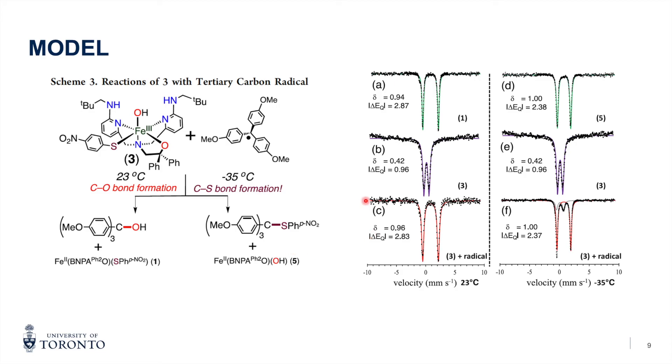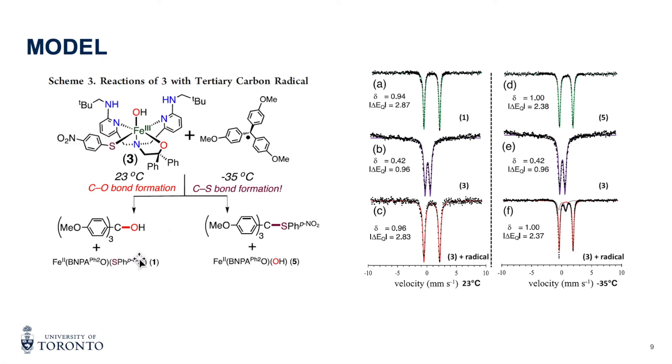And they used proton NMR and Mossbauer spectroscopy to show that the reaction between the model complex and the radical substrate indeed leads to the product. So this spectrum is the product here. And then three is the reactant. And then the third one is the reactant with the radical. So it shows that this spectrum looks very similar to this one, showing that the reaction does indeed happen. And then the same thing is done with the minus 35 degrees condition.